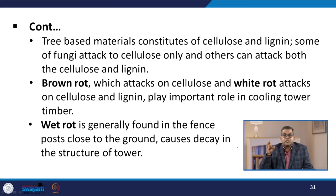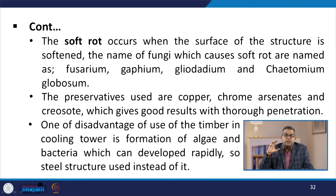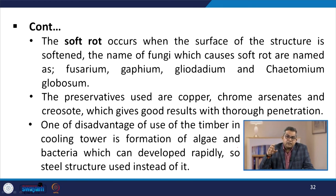Timber types widely used include western red cedar, Douglas fir, and Baltic redwood. Western red cedar is costly but more durable and absorbs the least preservatives. Douglas fir is resistant to absorbing preservatives. Baltic redwood absorbs the least amount of preservatives and is most useful compared to the other two. Timber-based tower structures can give good service life of up to 30 years if maintained rigorously. However, rotting by fungal species, brown rot attacking cellulose only, and white rot attacking both cellulose and lignin, can be problematic. Preservatives used include copper, chrome, arsenates, and creosote, which give good results with thorough penetration. One disadvantage of timber is algae and bacteria development, making steel structures sometimes preferable.